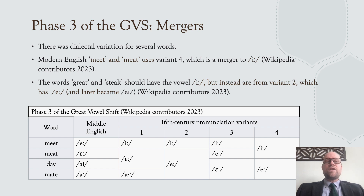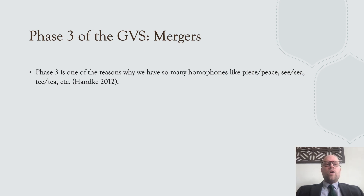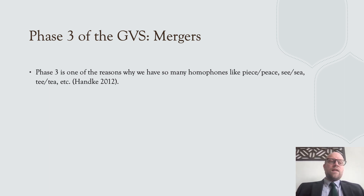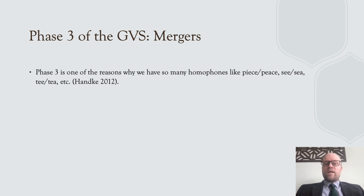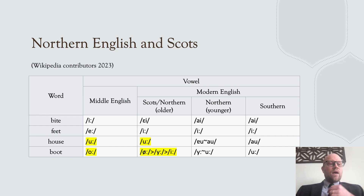In American English, 'great' and 'steak' later changed from a monophthong 'a' to a diphthong, giving us today's pronunciation. This also helps us understand homophones like 'peace/piece', 'sea/see', and 'tee/tea' — the fact that these are homophones goes directly back to the different dialects from which those words were borrowed.